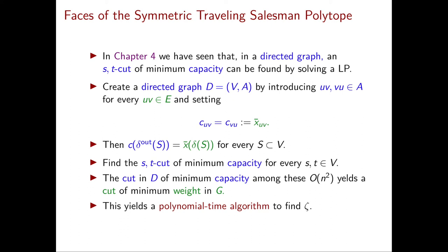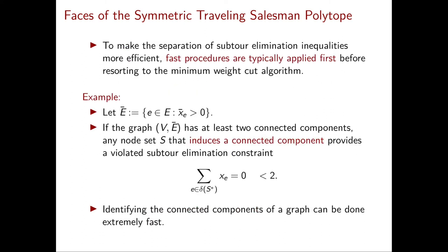This is a fundamental difference between separation of subtour elimination constraints and the separation of knapsack cover inequalities discussed earlier. While separation of cover inequalities is NP-hard, separation of subtour elimination constraints can be done in polynomial time. Even so, in practice this polynomial algorithm is normally used as a last resort, because simpler heuristics work much faster — they aren't guaranteed to find a violated inequality, but if they do, they find it extremely fast; otherwise we fall back to the polynomial time algorithm.